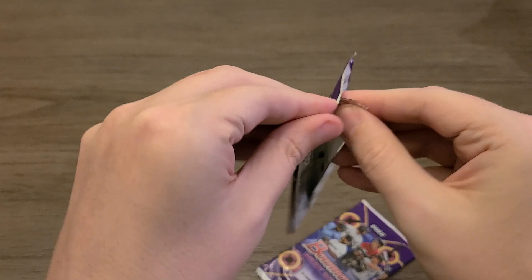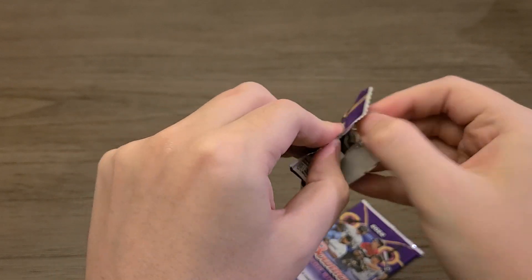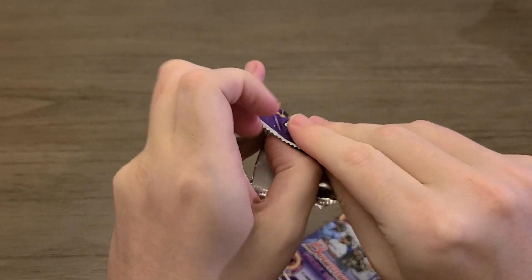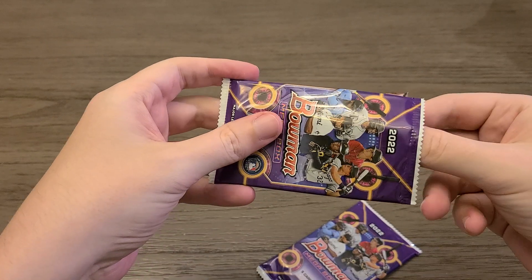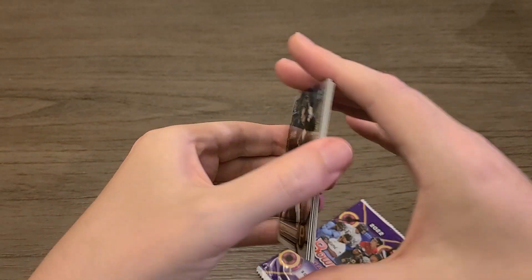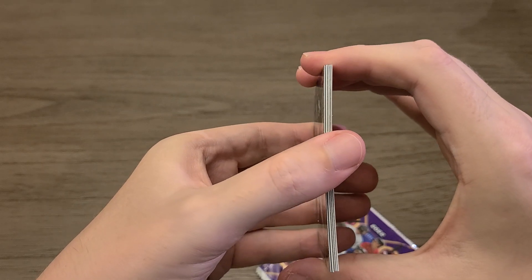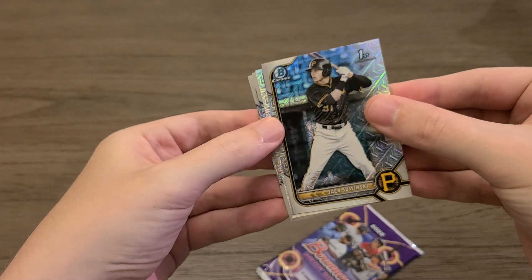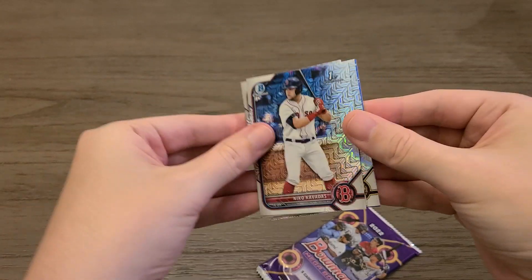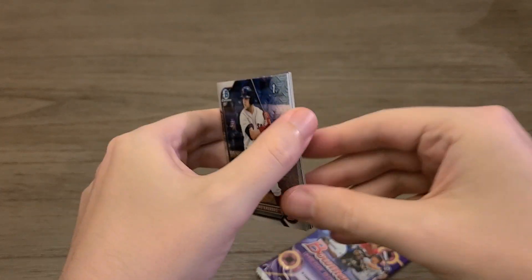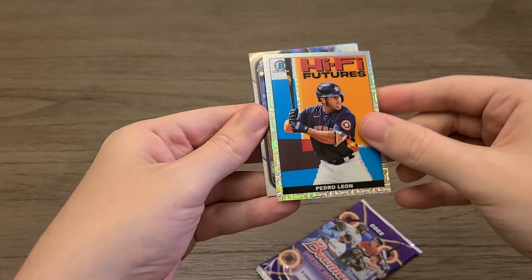So let's open up our mojo packs. That opened up really easily. Alright. Oh, we do have something though. We have one card that's a little thicker. Alright. Is it the one in the back now? There's one more. Alright.